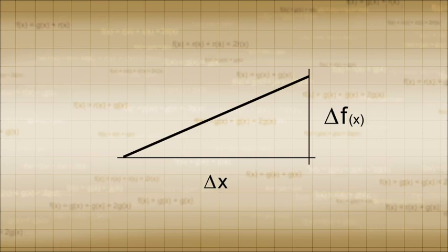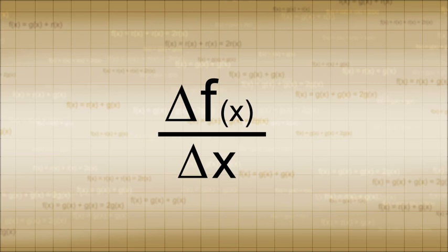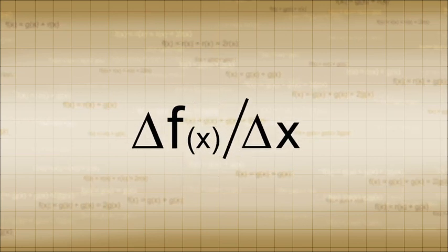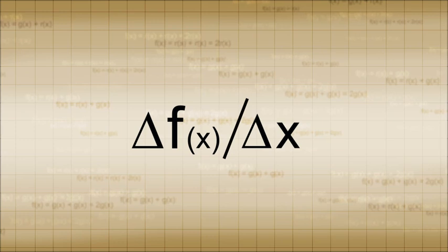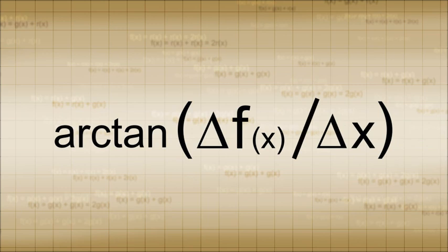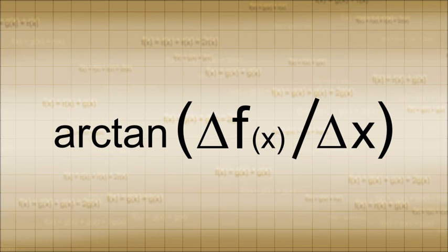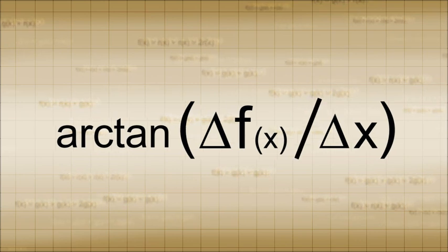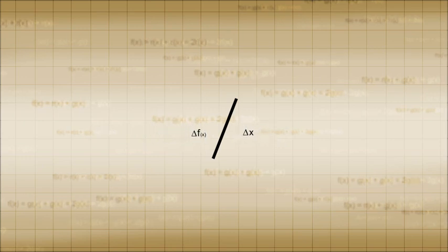This is another way of saying that we are interested in the ratio delta f of x over delta x, which is also called the rate of change. We could consider other relationships between these two values, such as delta x over delta f of x, or arc tan of delta f of x over delta x, but the most useful measure of the slope in later applications of calculus happens to be delta f of x over delta x. If we make the two numbers infinitesimally small, then all that we are left with is the exact rate of change at that particular position, which is going to be called the derivative.